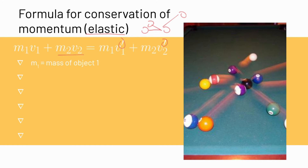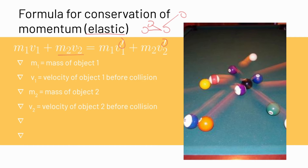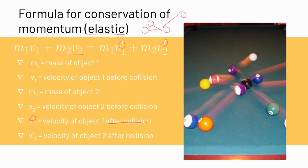M1 is the mass of object one. V1 is the velocity of object one before the collision. M2 is the mass of object two. V2 is the velocity of object two before the collision. V1 prime is the velocity of object one after the collision — that's what the prime indicates. And V2 prime is the velocity of object two after the collision. We'll look at an example of how this formula works.